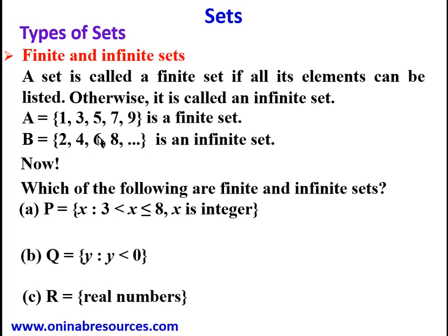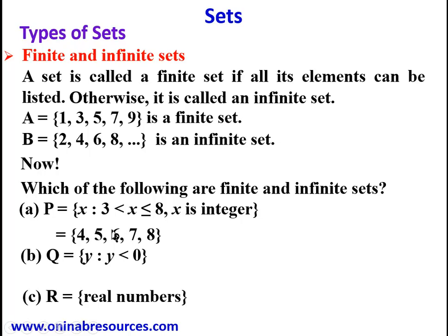Now, which of the following are finite or infinite sets? P is the set of X such that 3 < X ≤ 8, where X is an integer — a positive or negative whole number including zero. We can list the elements: X is greater than 3 but less than or equal to 8, giving us {4, 5, 6, 7, 8}. Since we are able to list all the elements, P is a finite set.